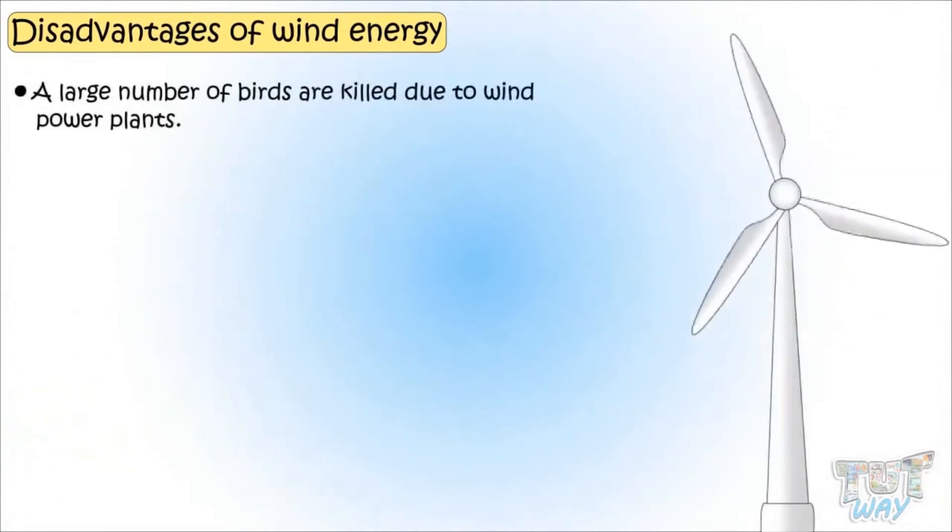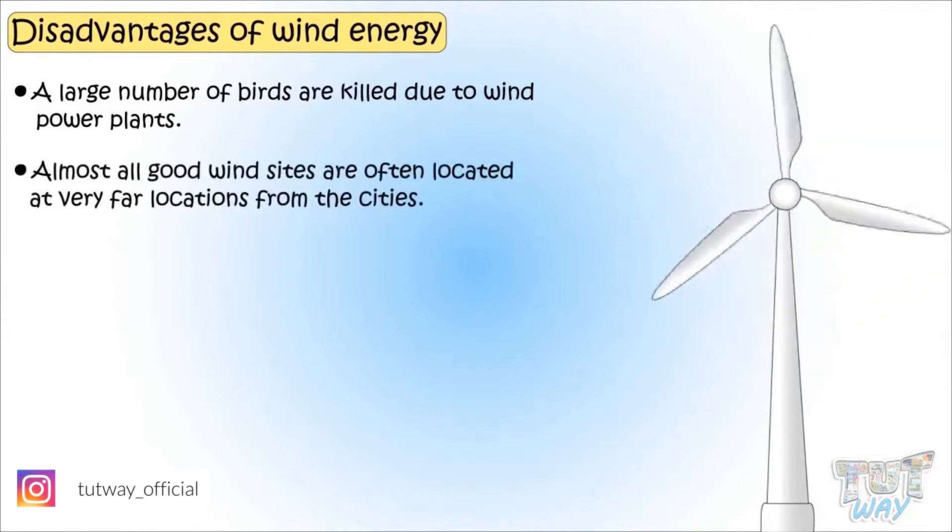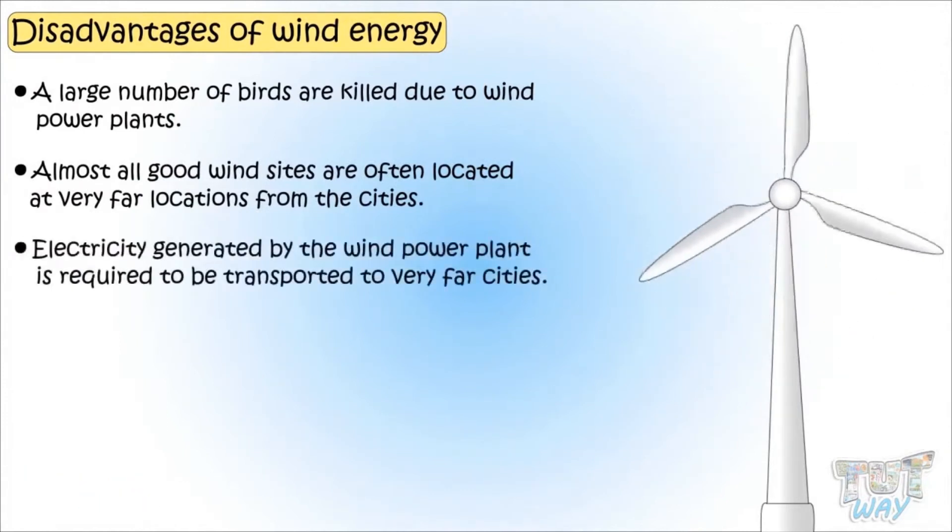A large number of birds get killed due to wind power plants. Another disadvantage is that almost all good wind sites are often located at very far locations from the cities, and the electricity generated by wind power plants is required to be transported to very far cities.